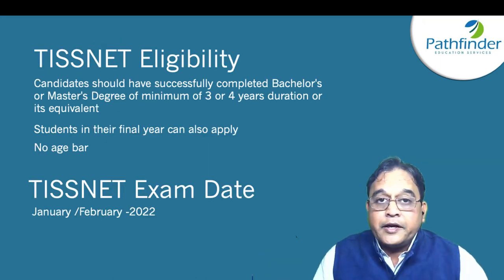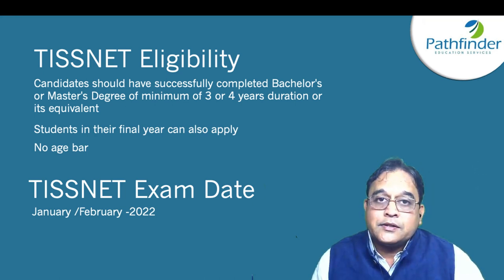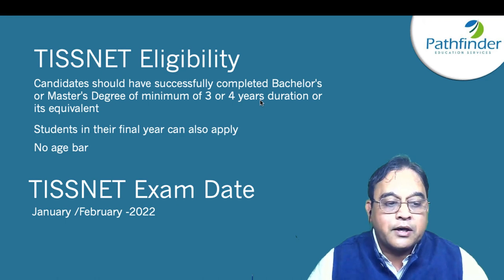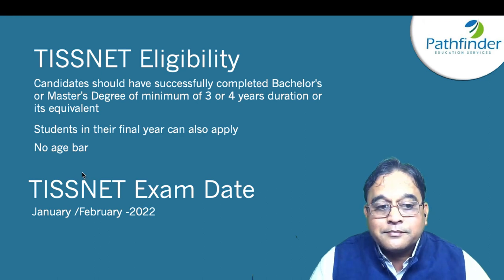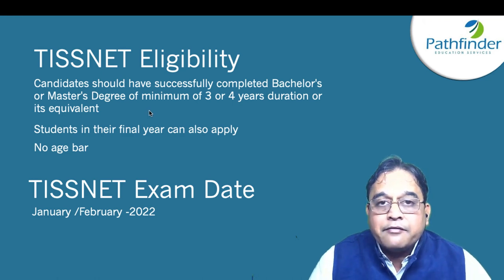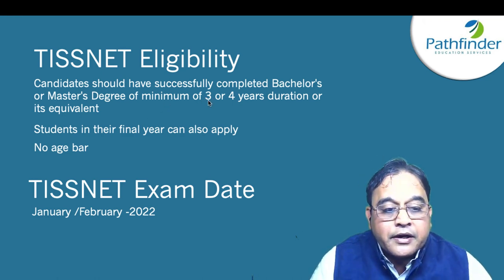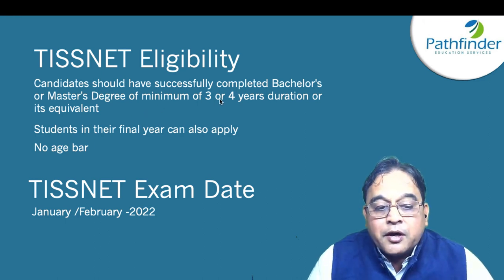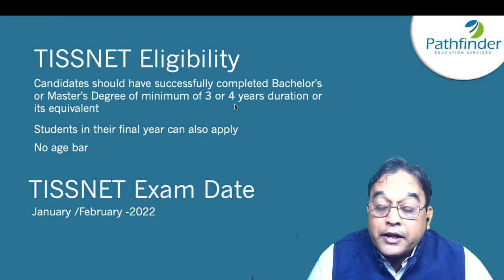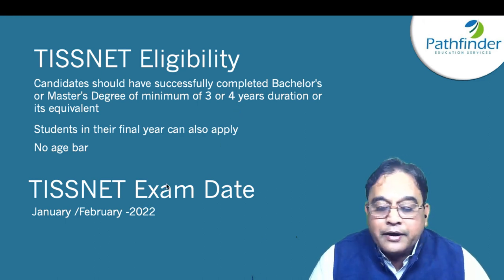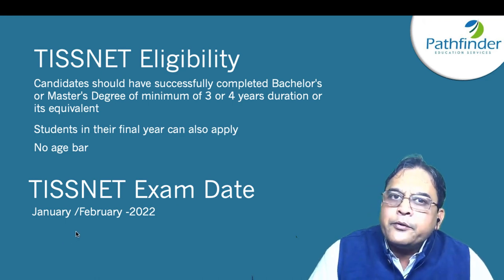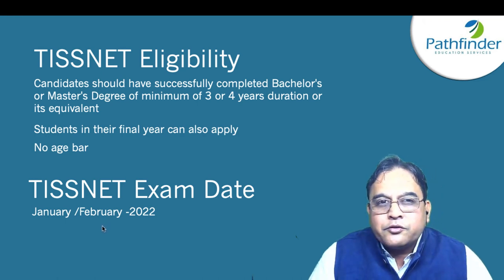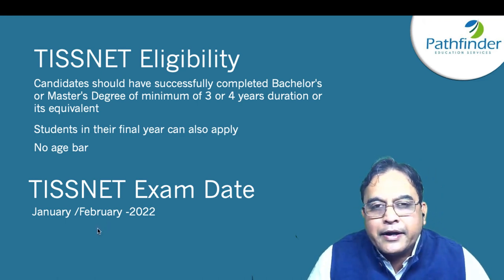Next, the eligibility for TISS. First, there is no age bar — a person from any age group can apply. The only condition is that applicants must have completed a graduation: a bachelor's degree or master's degree, minimum three or four years of bachelor's degree or an equivalent program. The exam is usually held in January, third or fourth week. Last year, probably due to the pandemic, it was held in February, so this year it may also be in February.